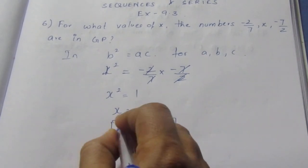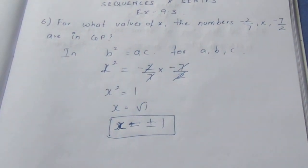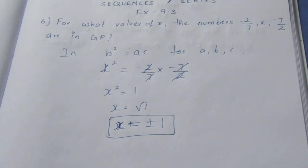So x can be plus 1 or x can be minus 1. Either number forms a GP. That's all with the sum. Thank you.